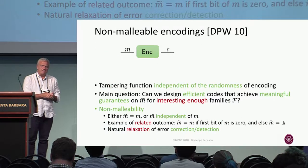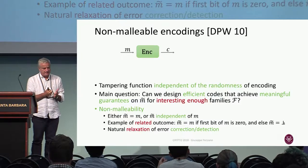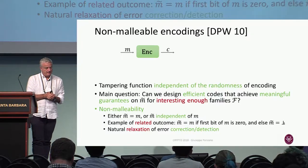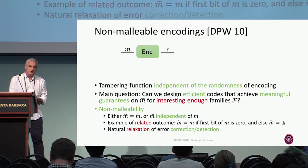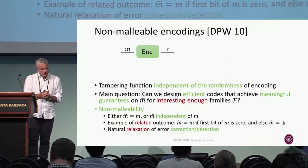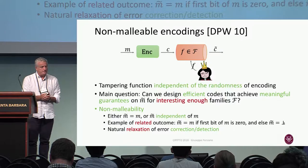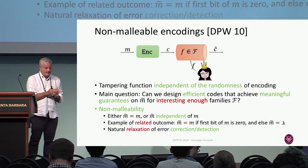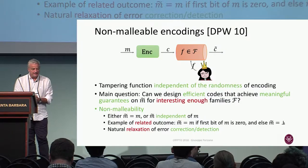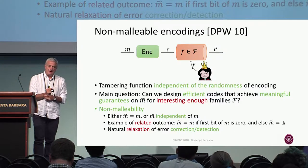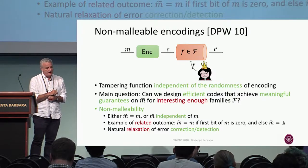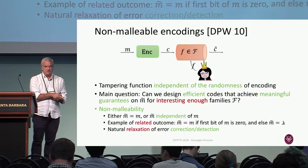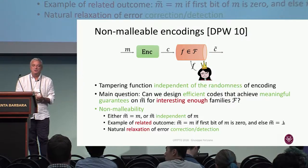There is a new notion that has been introduced relatively recently by Dziembowski, Pietrzak, and Wichs — non-malleable encodings. The encoding works as usual, but before the codeword reaches the decoder, there is an adversary that applies a tampering function F, which is independent of the randomness used by the encoding, and it creates a new codeword C-tilde.